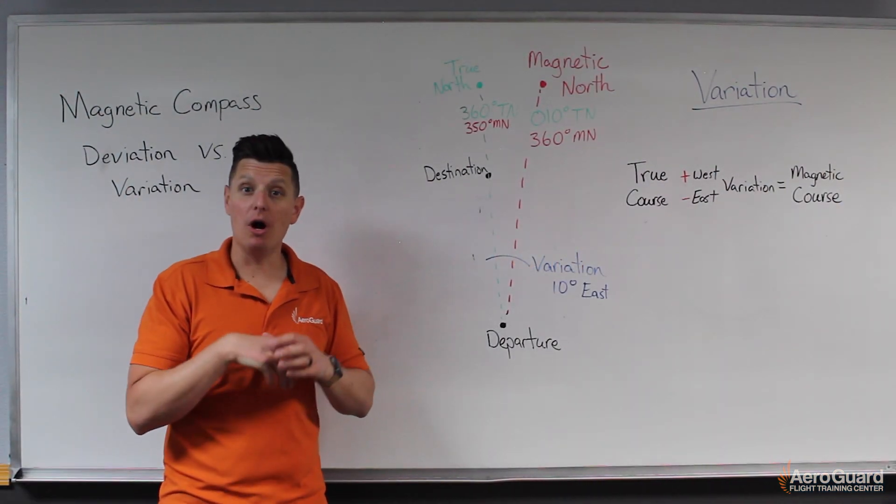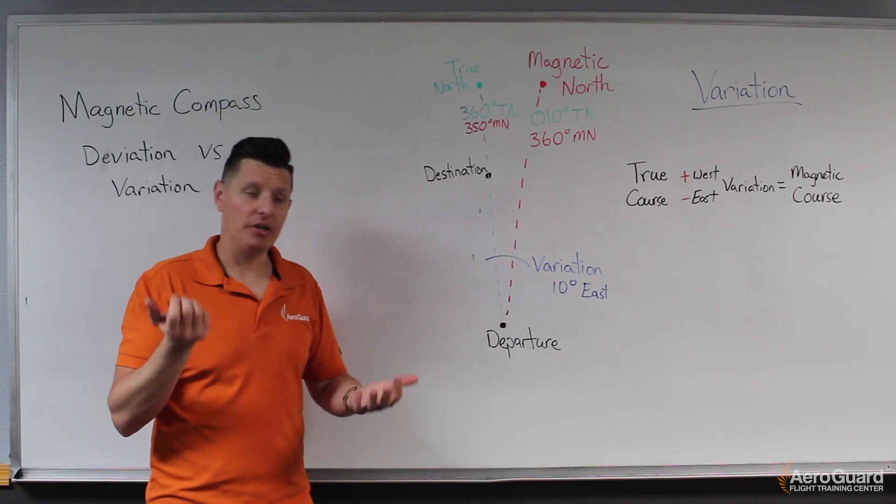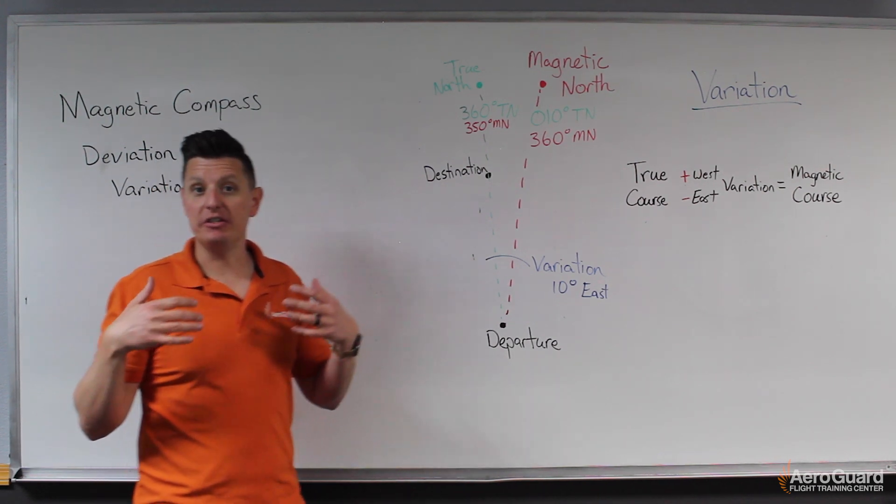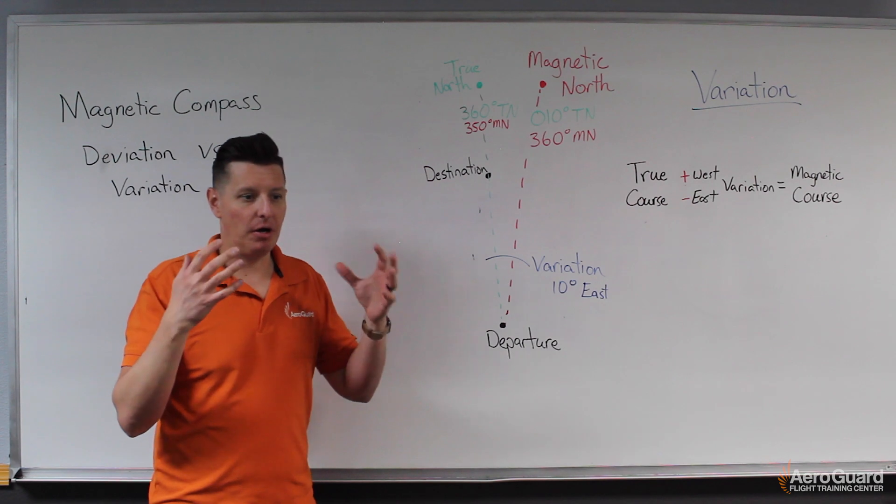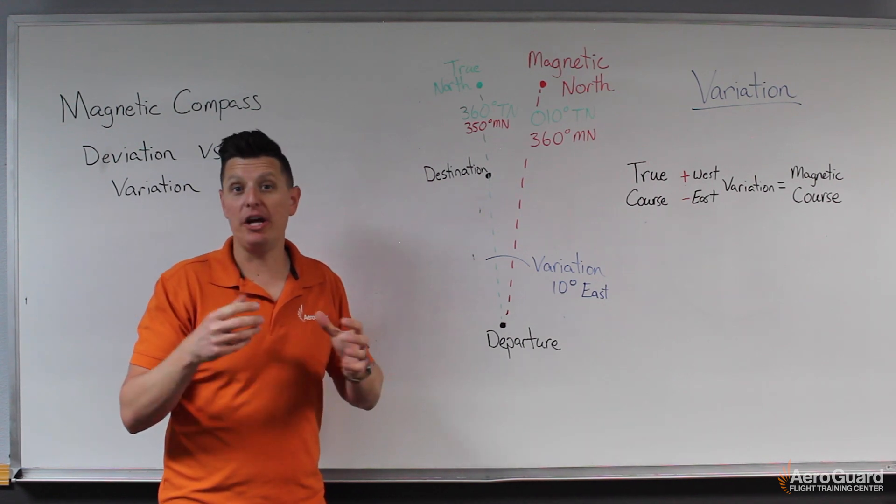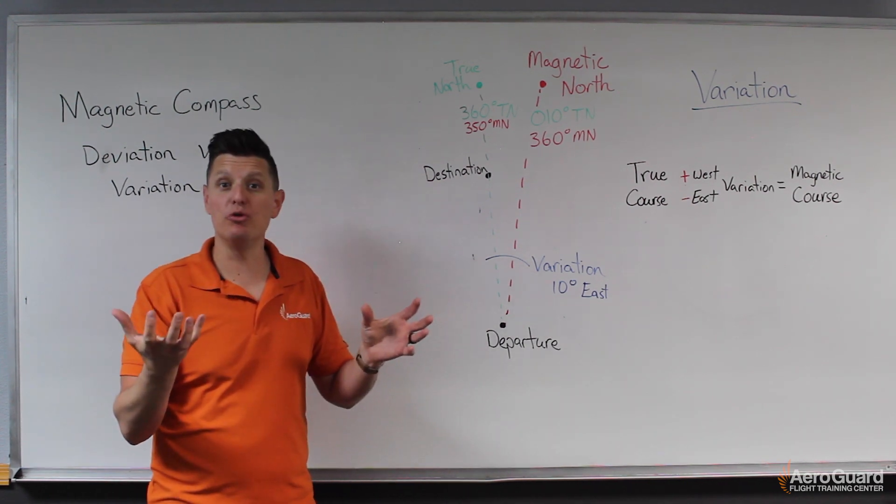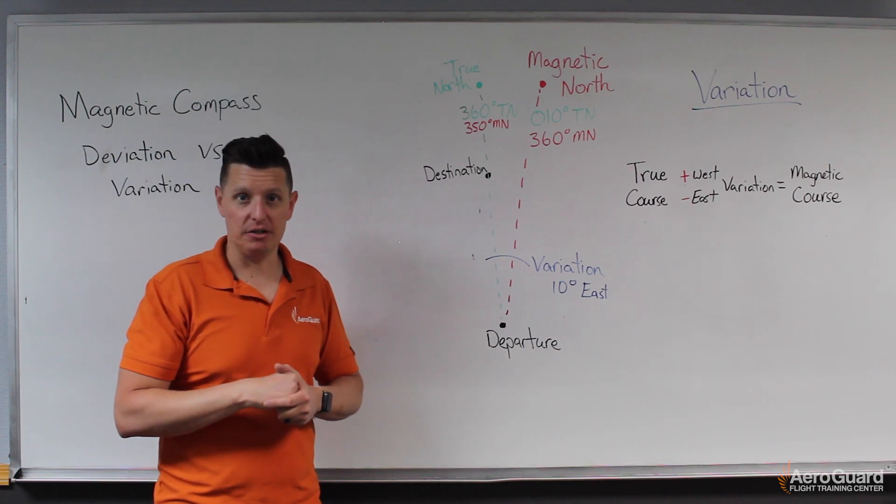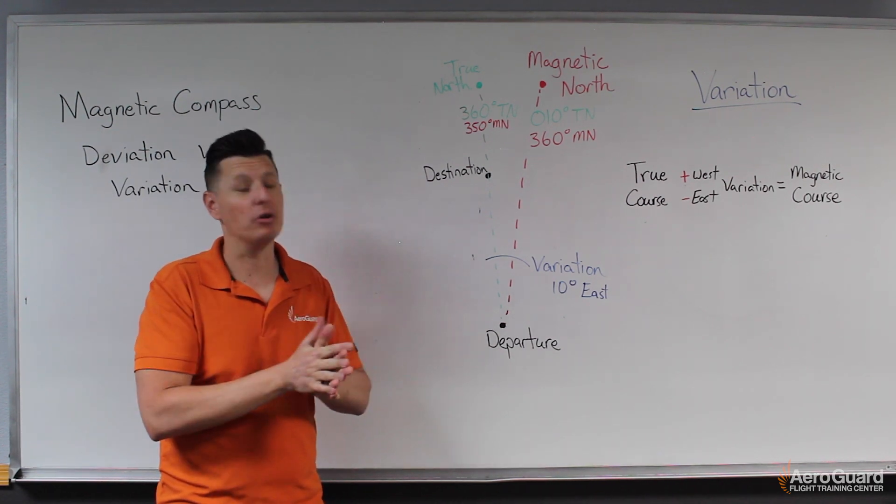So really what variation is, is a difference in location between magnetic north and true north, and that causes a slight change in what we're trying to navigate towards.